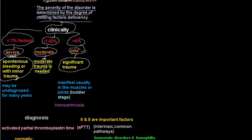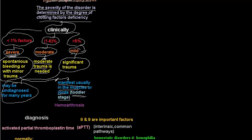In severe hemophilia, bleeding typically manifests in muscles and joints, and it first appears at the toddler stage when the child begins to walk. Mild hemophilia may go undiagnosed for many years with no symptoms, sometimes discovered accidentally. The most prominent manifestation of severe hemophilia is hemarthrosis — bleeding into the joints.